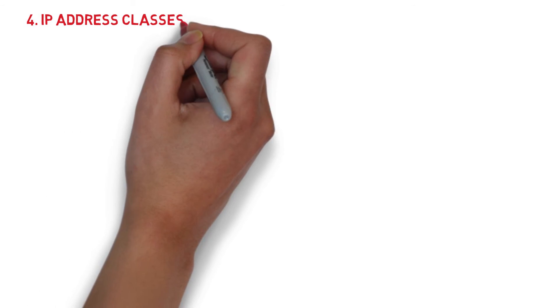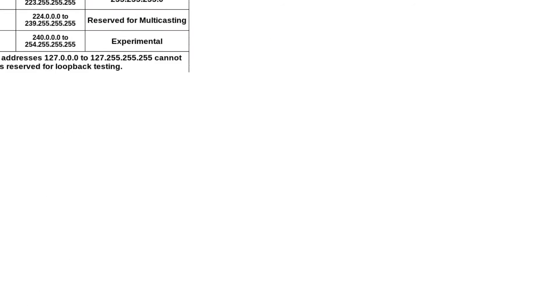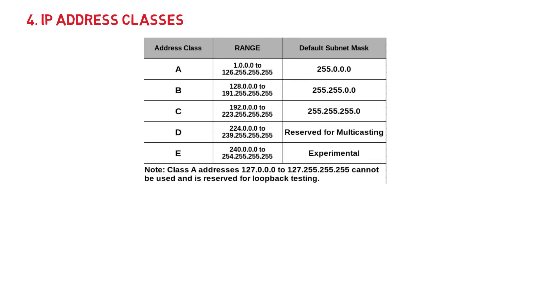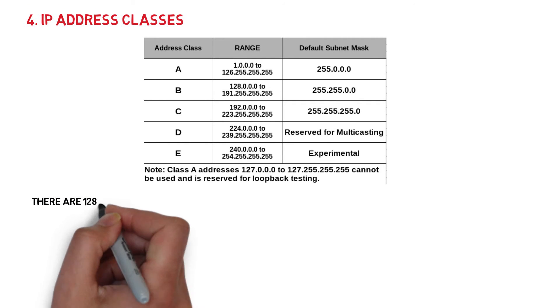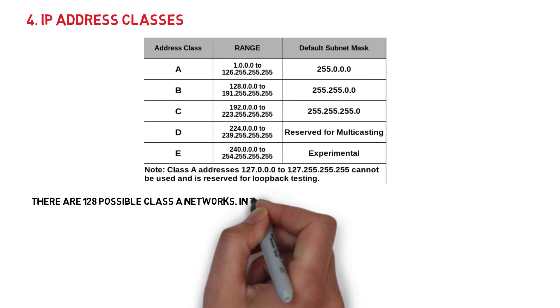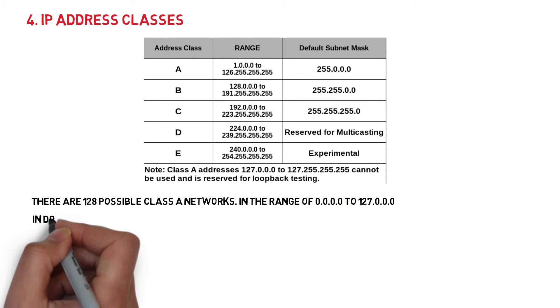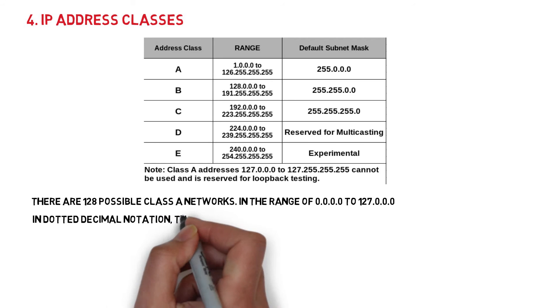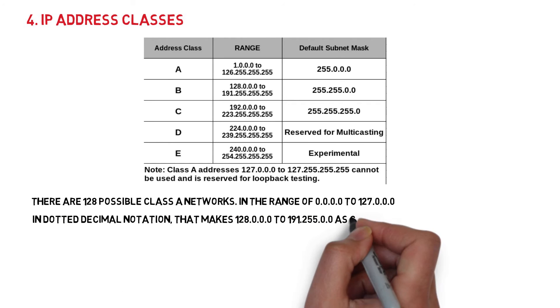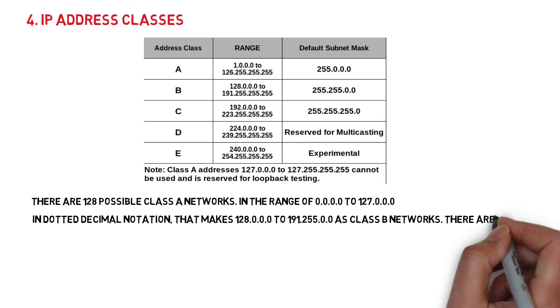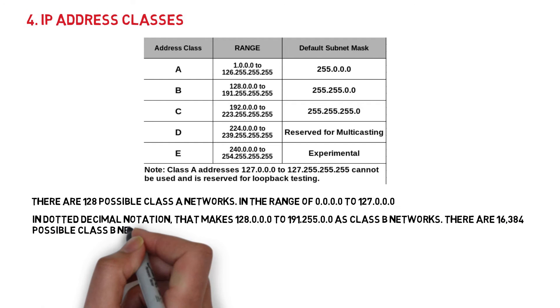IP address classes. There are 128 possible Class A networks in the range of 0.0.0.0 to 127.0.0.0 in dotted decimal notation. That makes 128.0.0.0 to 191.255.0.0 as Class B networks. There are 16,384 possible Class B networks.